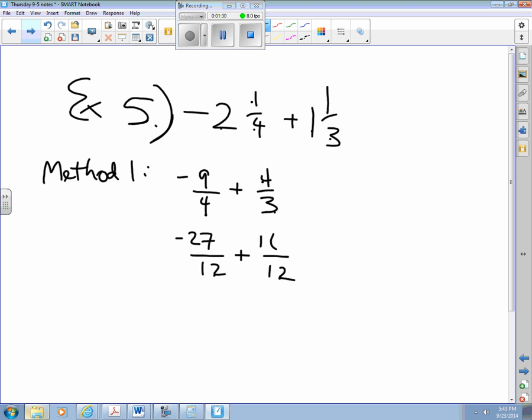Now I combine those two things. 27 negatives plus 16 positives, I think of that in my head as 27 minus 16, which is 11. But I have more negatives than I do positives, so it's a negative 11. And there's the final answer.